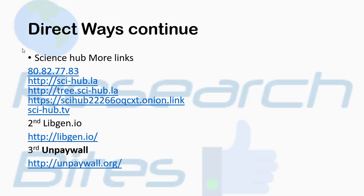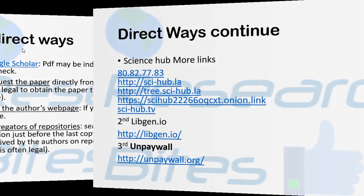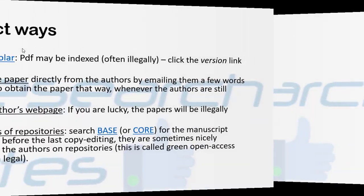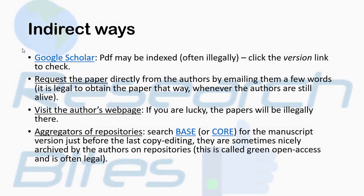The third direct resource also has a huge number of articles in its collection and you can get those articles from there as well. Now let me move towards the indirect ways — for example, if you are not getting any articles from those direct links, what other methods can you use to get the articles?